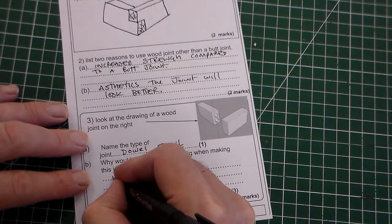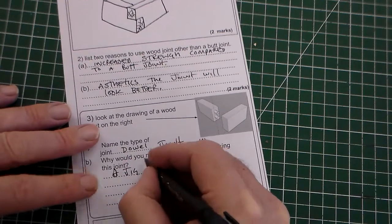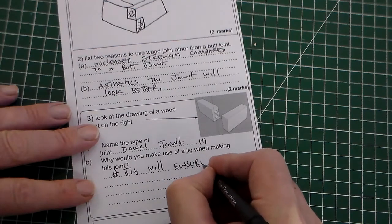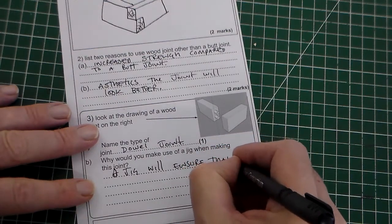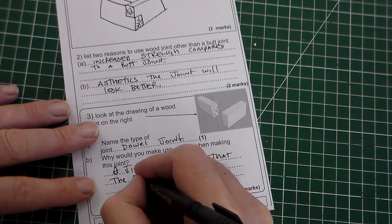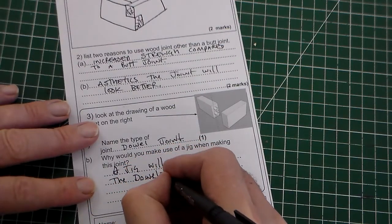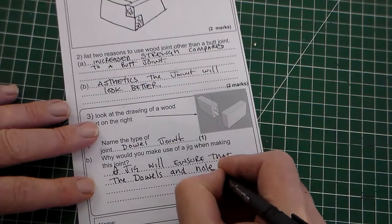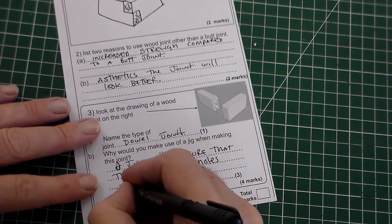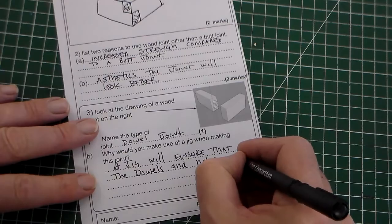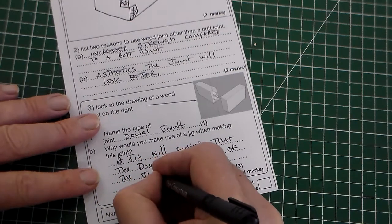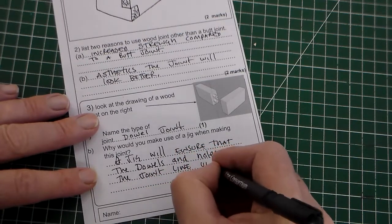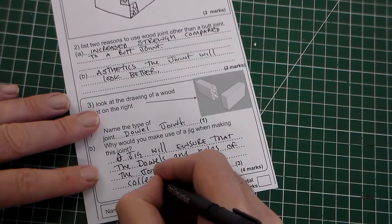So a jig will ensure that the dowels and holes, the holes of the joint line up correctly.